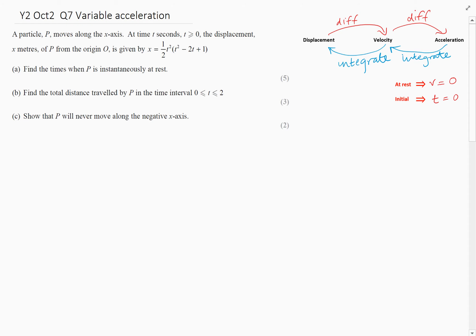This is the final question, and it's on mechanics. So part A, the question is talking about the times when P is instantaneously at rest. If you ever see at rest or instantaneously at rest, just remember that means that the velocity must be zero.